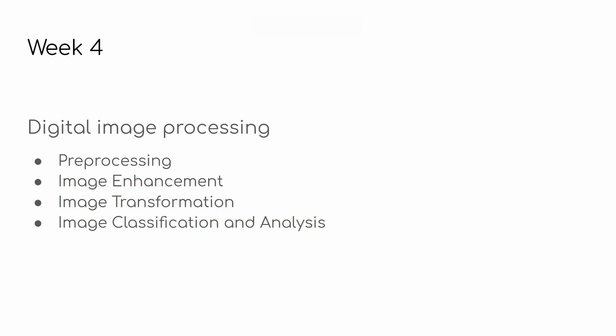I'll link all previous videos in the description box. Week two we spoke about the electromagnetic spectrum and how electromagnetic energy interacts with the atmosphere and earth. Week three we talked about the types of remote sensing — active and passive — sensors, characteristics of satellites, and scanning.